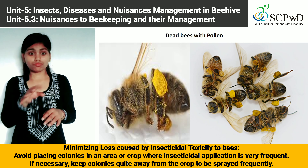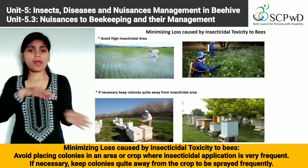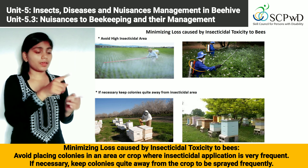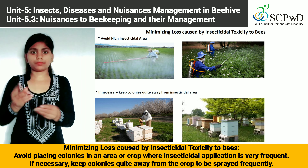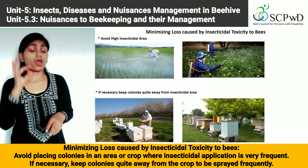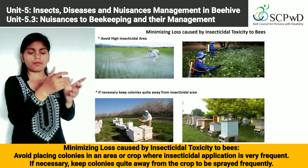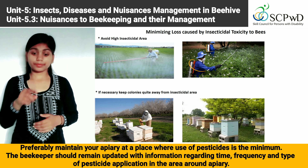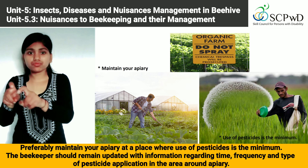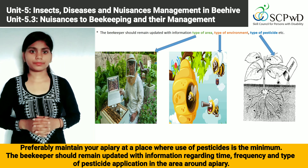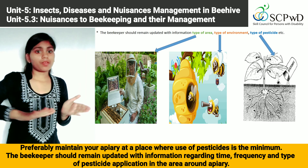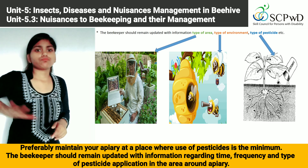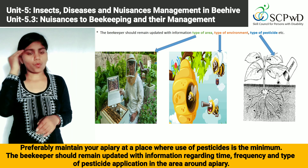Minimizing loss caused by insecticidal toxicity to bees: avoid placing colonies in an area or crop where insecticidal application is very frequent. If necessary, keep colonies quite away from the crop to be sprayed frequently. Maintain your apiary at a place where use of pesticides is minimum. The beekeeper should remain updated with information regarding time, frequency, and type of pesticide application in the area around the apiary.